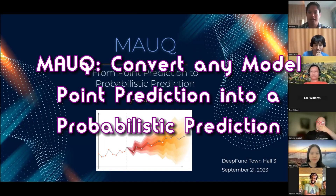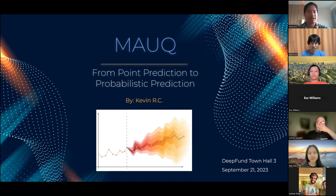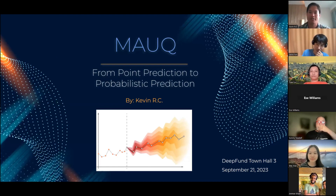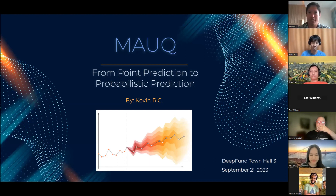Hi everyone, my name is Kevin. I'm calling in from the beachfront city of Phuket, Thailand. I'm supposed to be on vacation, but I'm here to present my new project proposal, MOCK, whose objective is to turn any model point prediction into a probabilistic one.